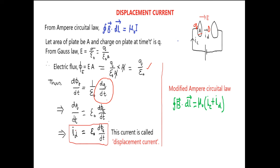And this DQ by DT is named as displacement current. So displacement current is epsilon naught D phi E by DT. This current.